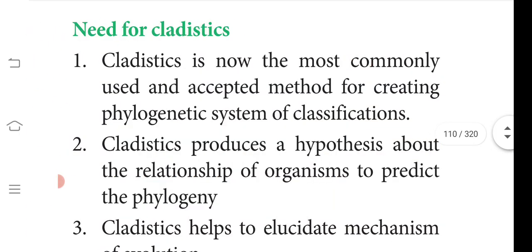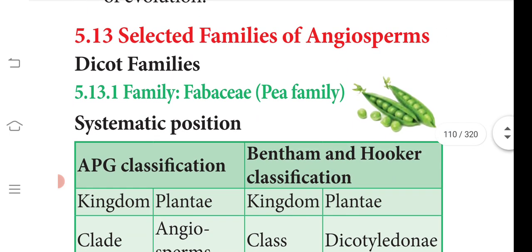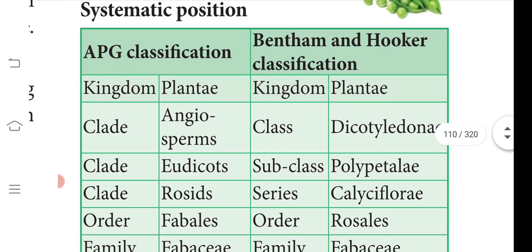The need for cladistics: it is now the most commonly accepted method for creating a phylogenetic system of classification. Cladistics produces a hypothesis about the relationships of organisms to predict phylogeny and helps elucidate the mechanisms of evolution. Selected families are classified accordingly.